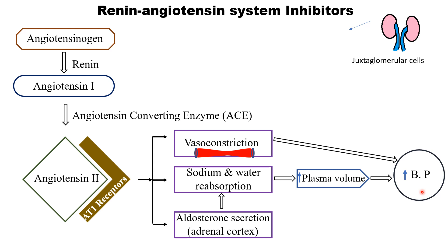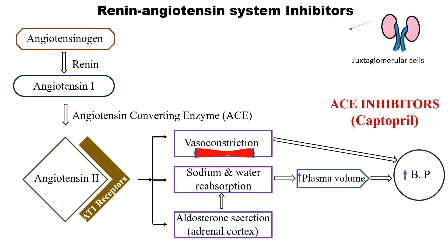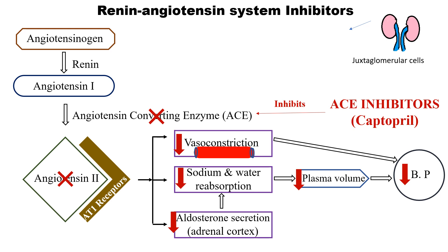These are the various processes through which blood pressure can be reduced. The first subcategory of renin-angiotensin system inhibitors is ACE inhibitors — for example, captopril. Captopril inhibits angiotensin-converting enzyme. Inhibition of ACE leads to inhibition of angiotensin 2 formation. If angiotensin 2 is inhibited, there is decreased vasoconstriction, decreased sodium and water reabsorption, decreased aldosterone secretion, and reduced plasma volume — and the overall effect is a decrease in blood pressure.